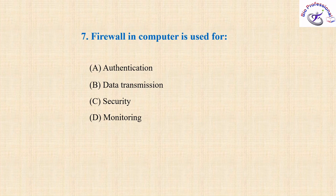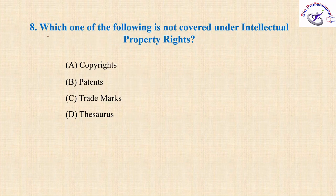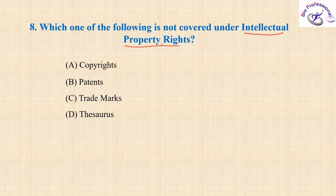A firewall in a computer is used as a network security system, so option C is the correct answer. Next: which of the following is not covered under Intellectual Property Rights? To solve this you need a clear idea of what intellectual property rights means. It refers to creations of the mind such as inventions, artistic works, symbols, and names used for commercial purposes. If someone invents or creates something new, they have the right to use it commercially and others cannot.